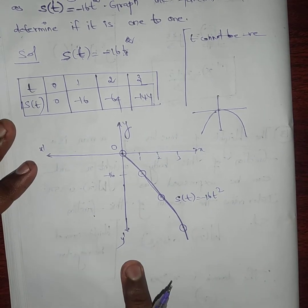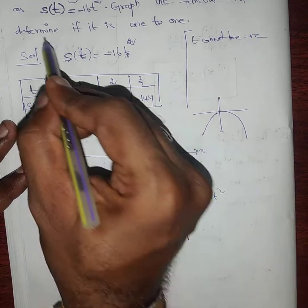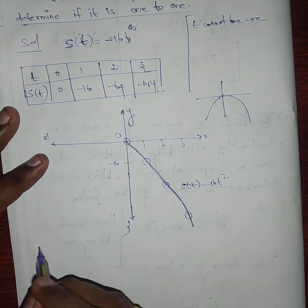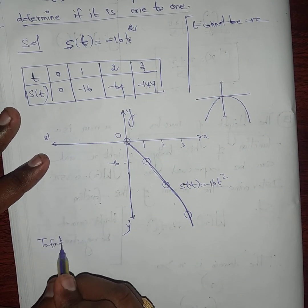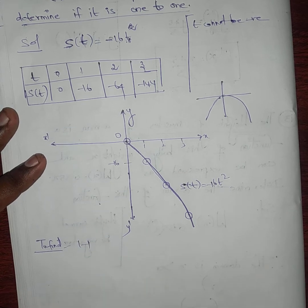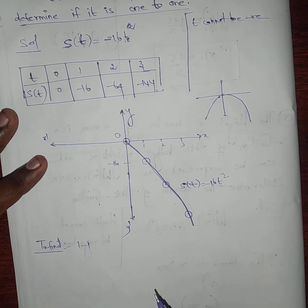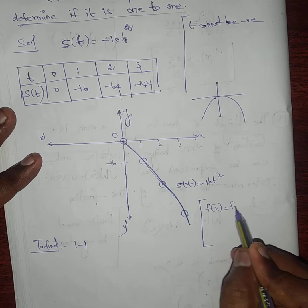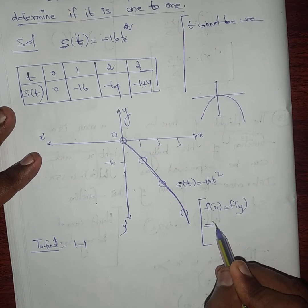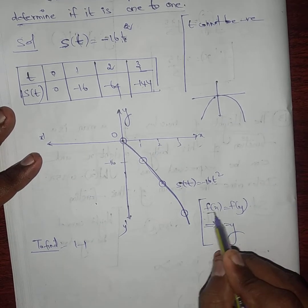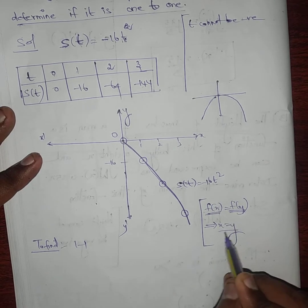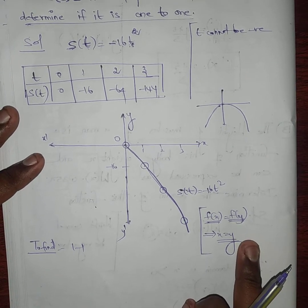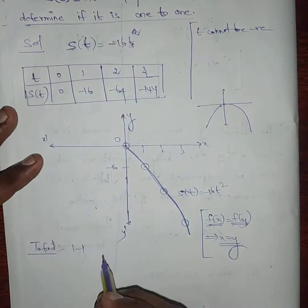Next, the question asks: determine if the function is one-to-one. To find whether it is one-to-one, we use the criterion studied earlier: f(x) = f(y) implies x = y. We apply the same procedure here for s(t).